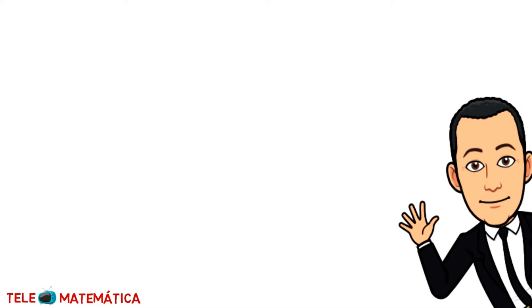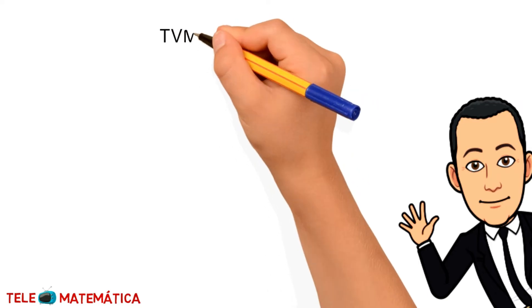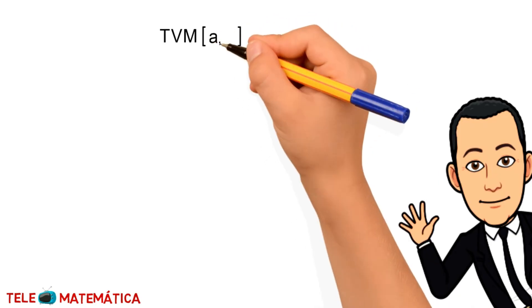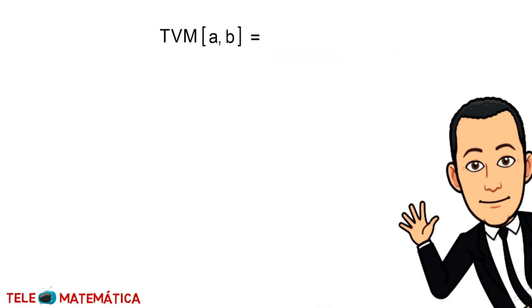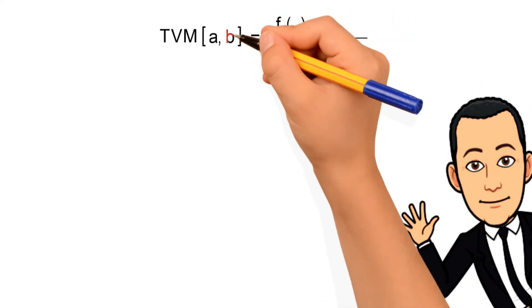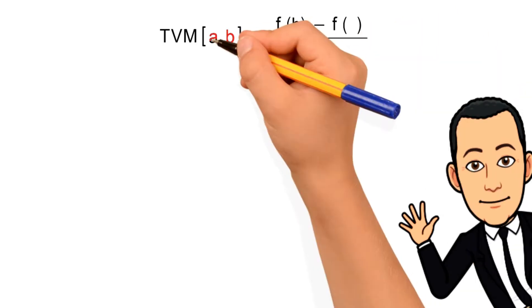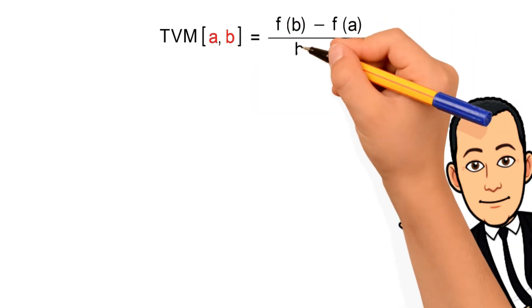Para comenzar, introduciremos el concepto de tasa de variación media de una función f en un intervalo cerrado [a, b]. Se define como el cociente entre la diferencia de la función evaluada en los valores de los extremos del intervalo y la diferencia entre esos valores.